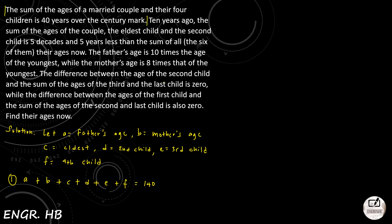Next, ten years ago, the sum of the ages of the couple, the eldest child, and the second child is 5 decades and 5 years less than the sum of all their ages now. So the couple is A plus B, the eldest is C, and the second child is D.